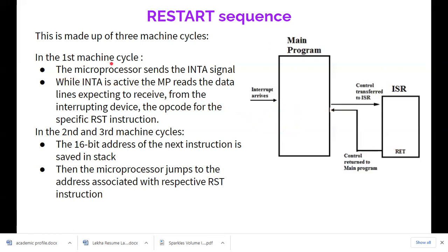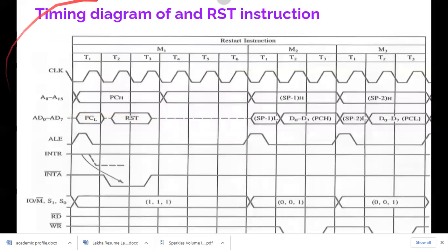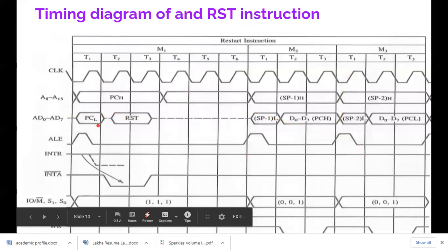In the first machine cycle, the microprocessor sends the INTA signal, interrupt acknowledge signal. While INTA is active, the microprocessor reads the data lines expecting to receive from the interrupting device, and the opcode for the specific RST instruction. If you see this, this is a timing diagram here.